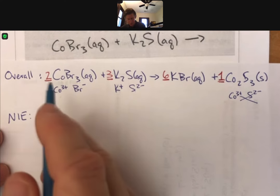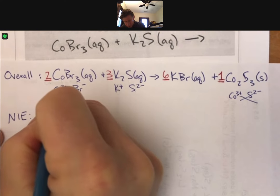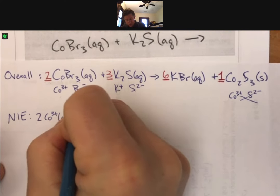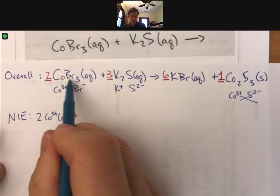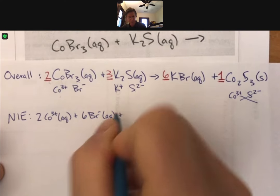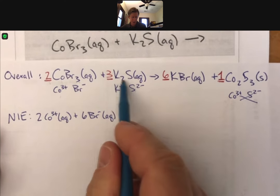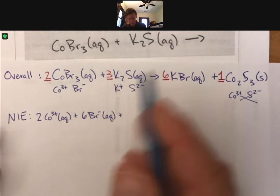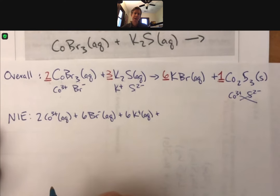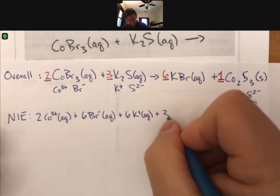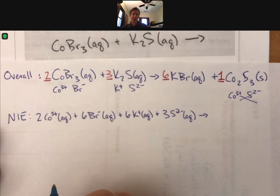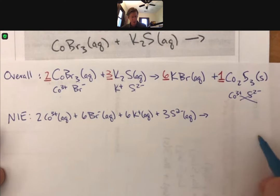I've got two cobalts. And those are cobalt plus three, as we've already noted. And I've got two times three, I've got six bromides. I've also got three times two, I've got six potassium ions. And three sulfide ions with their charges, just like so.